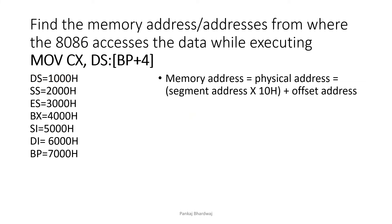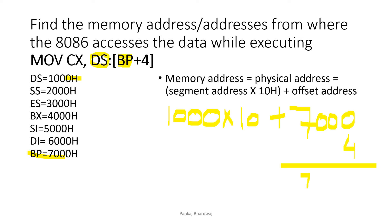Next is MOV CX,DS:[BP+4]. By default BP uses the stack segment, but here it is overridden with DS. Physical address = DS×10H + (BP+4) = 1000×10H + (7000H+4H) = 10000H + 7004H = 17004H. Since CX is a 16-bit register, two memory locations are required: 17004H and 17005H.